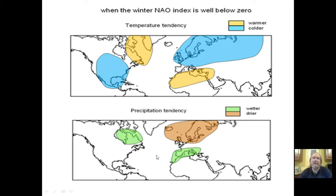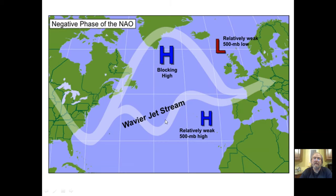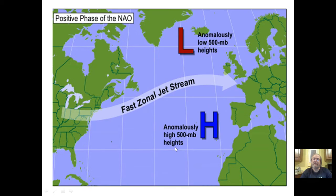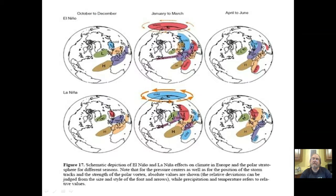This diagram shows the global context: in the negative phase of the NAO you get a wavier, blocking-influenced jet stream versus the positive phase with fast, zonal flow following latitudinal lines.